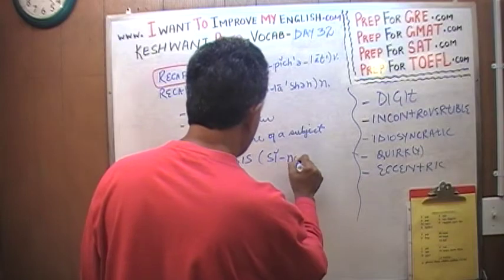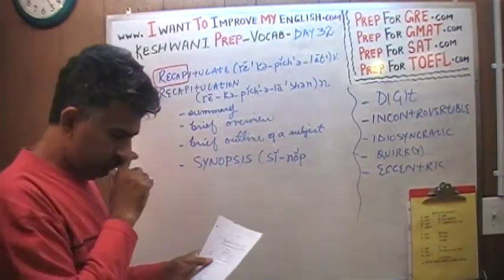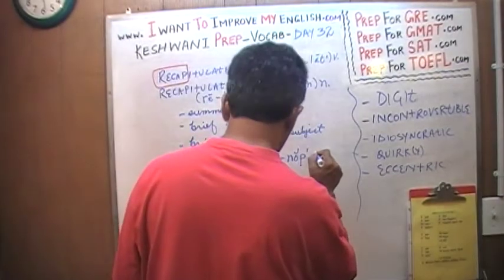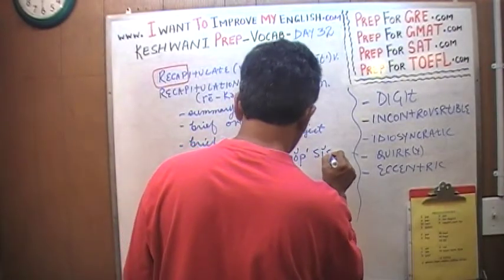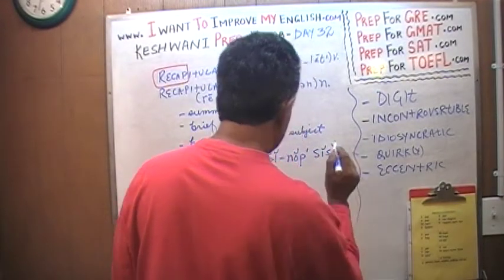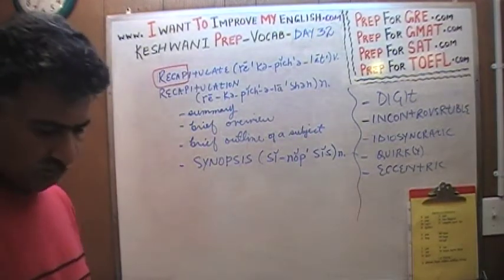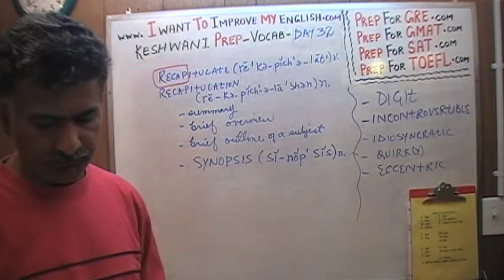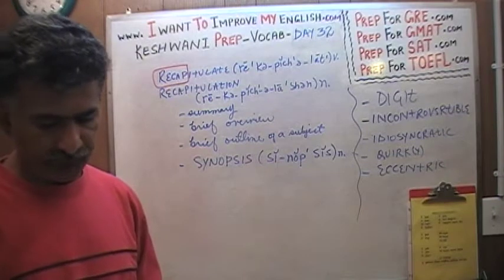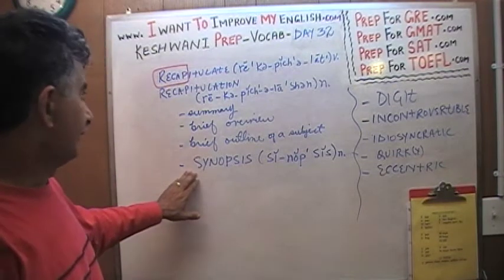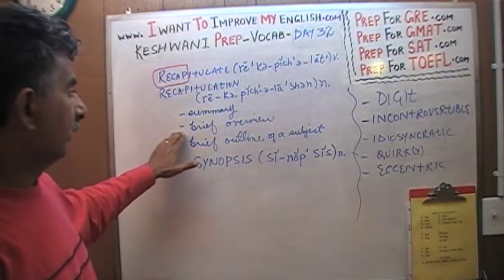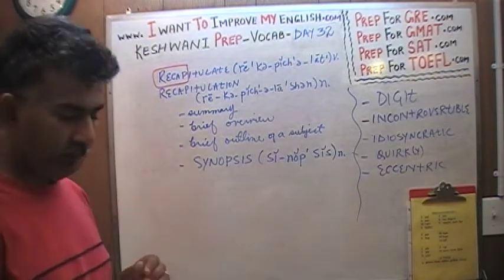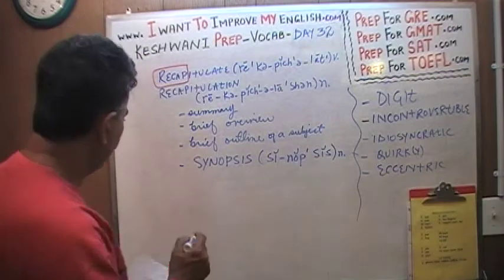This is why I always put down the pronunciation — because we want to make sure we minimize the number of occasions that we make a fool of ourselves. The word is synopsis. Synopsis, which simply means a summary, an outline, an overview — a recapitulation. They all mean the same thing.